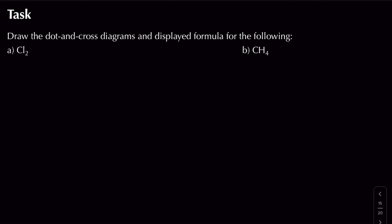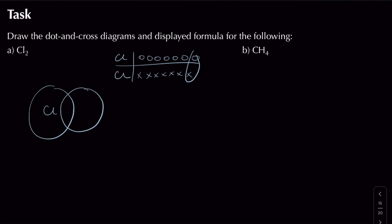Now there are two practice examples — feel free to pause the video. For Cl₂, chlorine is in group 7 with 7 electrons in the outer shell. I form one shared pair between the two chlorine atoms, giving each chlorine 8 electrons total, and then add the non-bonding electrons (three lone pairs per atom). The displayed formula is simply Cl–Cl.